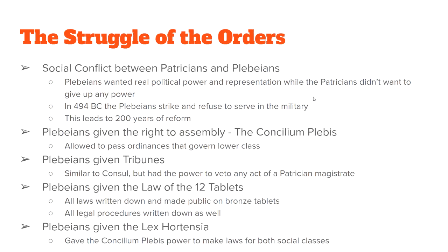There was an event in Roman history called the Struggle of the Orders — a revolt of the lower class. The Plebeians had basically no political power at first. In 494 BC, the Plebeians went on strike: they quit working, quit serving in the military, and demanded more political power.